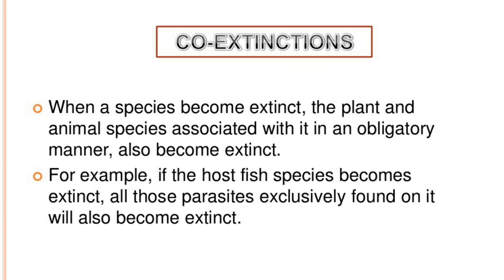Co-extinction: when a species becomes extinct, the plant and animal species associated with it in an obligatory manner also become extinct. For example, if a host fish species becomes extinct, all those parasites exclusively found on it will also become extinct.